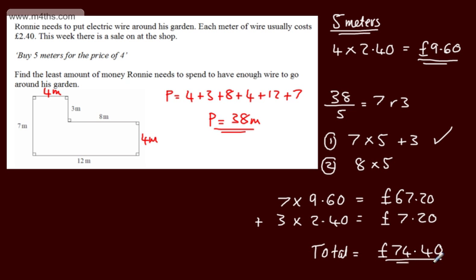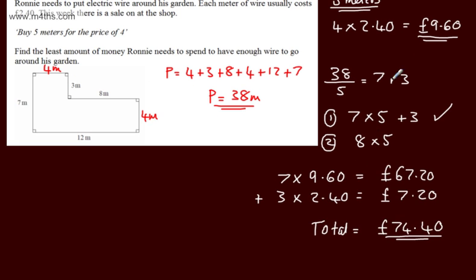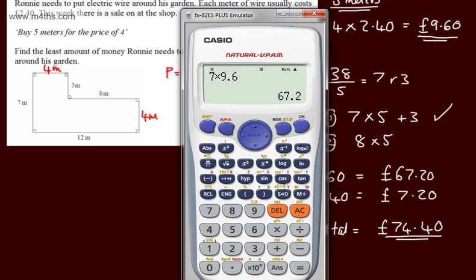So that's the cheapest now. He can buy all of the wire to go round the garden. If we've gone the other way, we would have done 8 times by this quantity here, and we'll see quite clearly that is going to be more expensive.